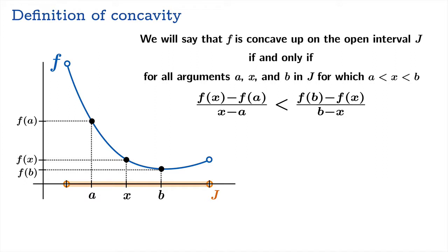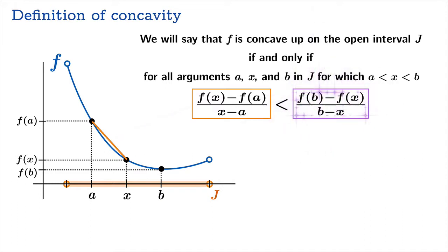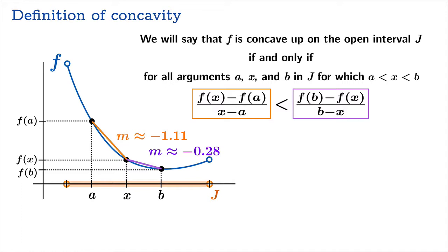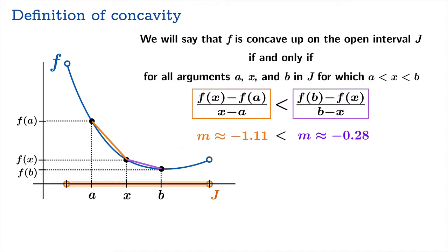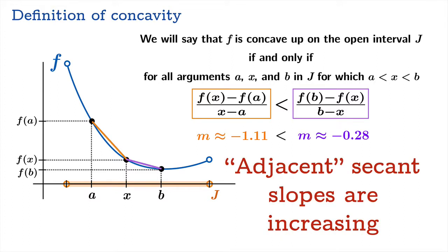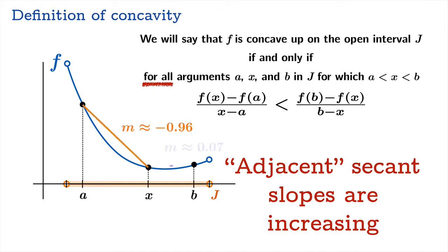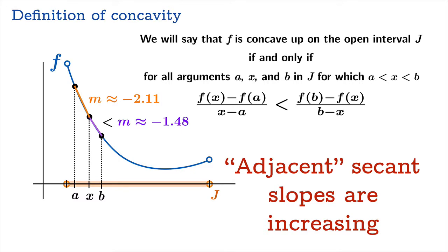So f is concave up on the open interval J if and only if, for all a < x < b inside J, the left secant slope (f(x) − f(a))/(x − a) is less than the right secant slope (f(b) − f(x))/(b − x). For example, the left-hand secant slope might be −1.11 and the right-hand slope might be −0.28, and the left is indeed less than the right. We can rephrase the condition as: adjacent secant slopes are increasing — no matter which triplet of points you select, the secant slope on the left must be smaller than the one on the right.